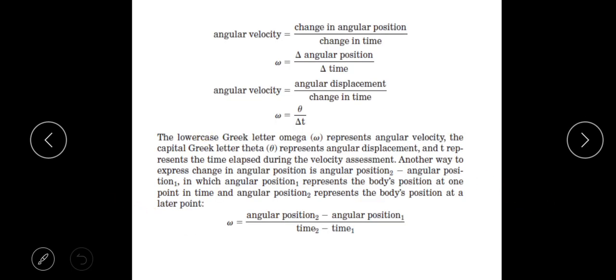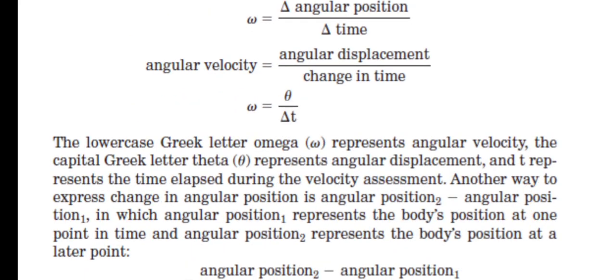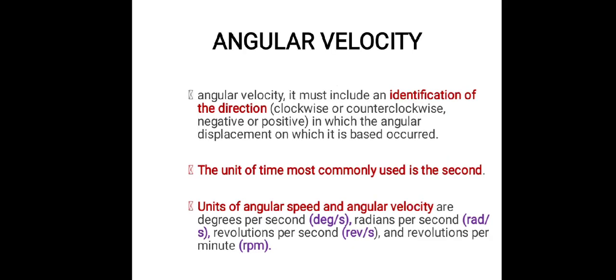Angular velocity is the change in angular position divided by the change in time. It is represented by the lowercase Greek letter omega (ω), and the formula is: ω = Δθ / Δt, where θ represents angular displacement and t represents the time elapsed. Another way to express this is: angular velocity equals (angular position 2 minus angular position 1) divided by (time 2 minus time 1).